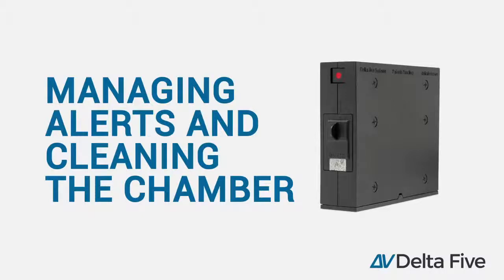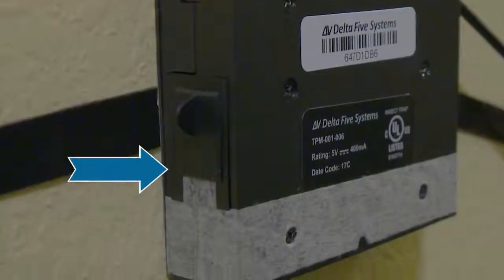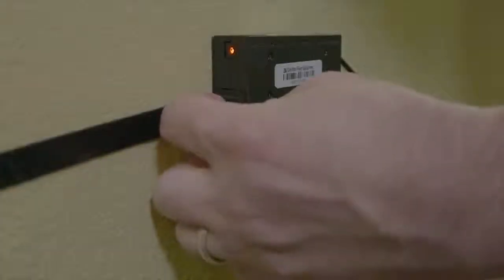What to do once the device has been alerted: an alerted device will have a solid red light. To determine what has been captured, ensure the chamber door is closed and grab the tab to slide the chamber out of the device.